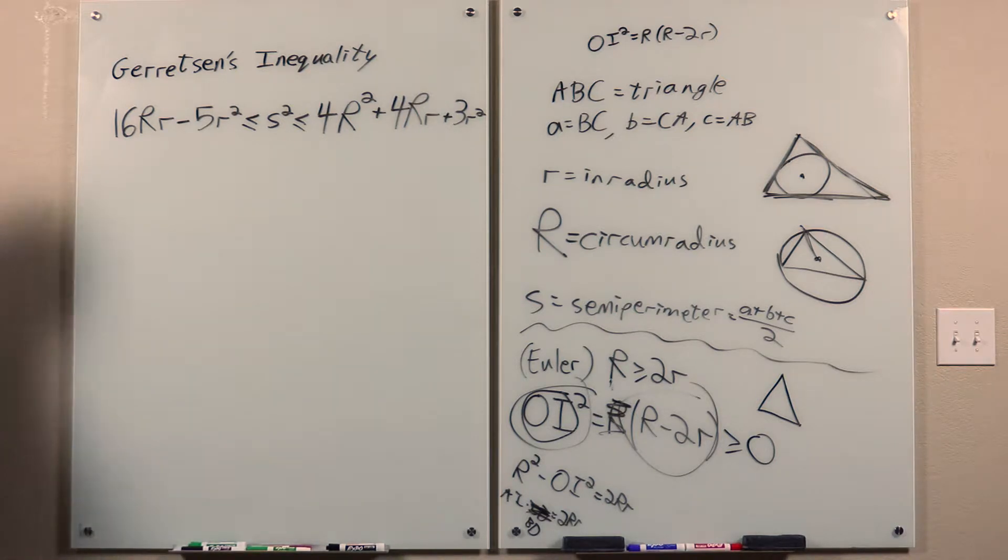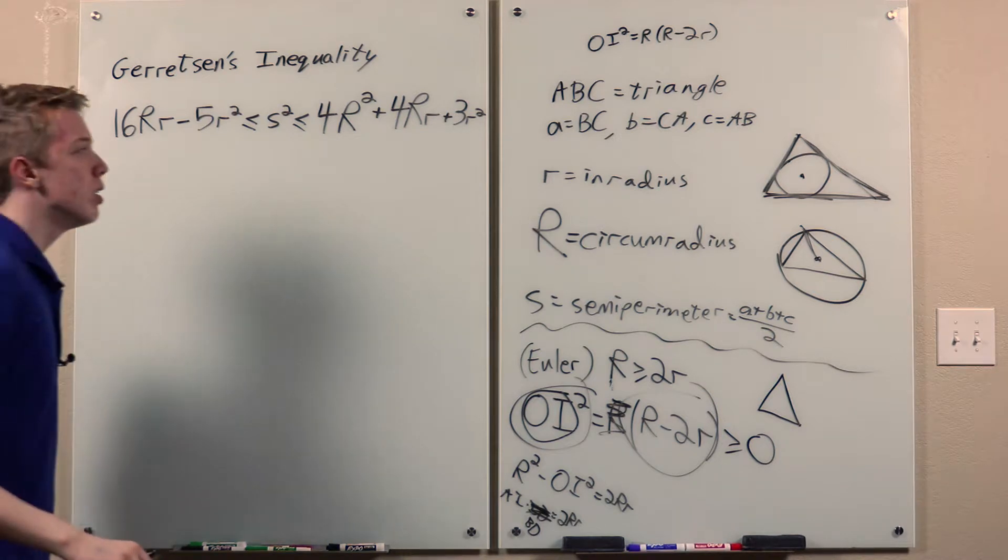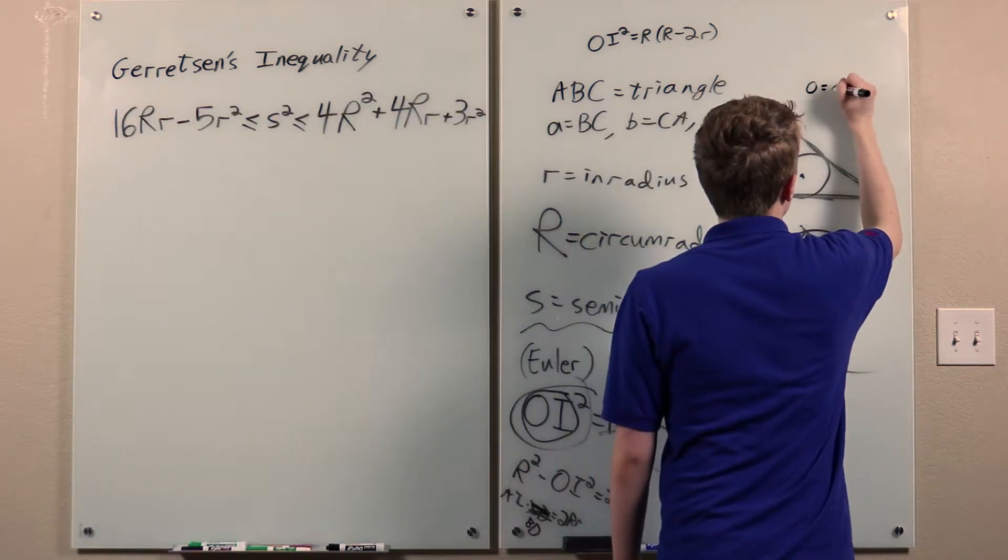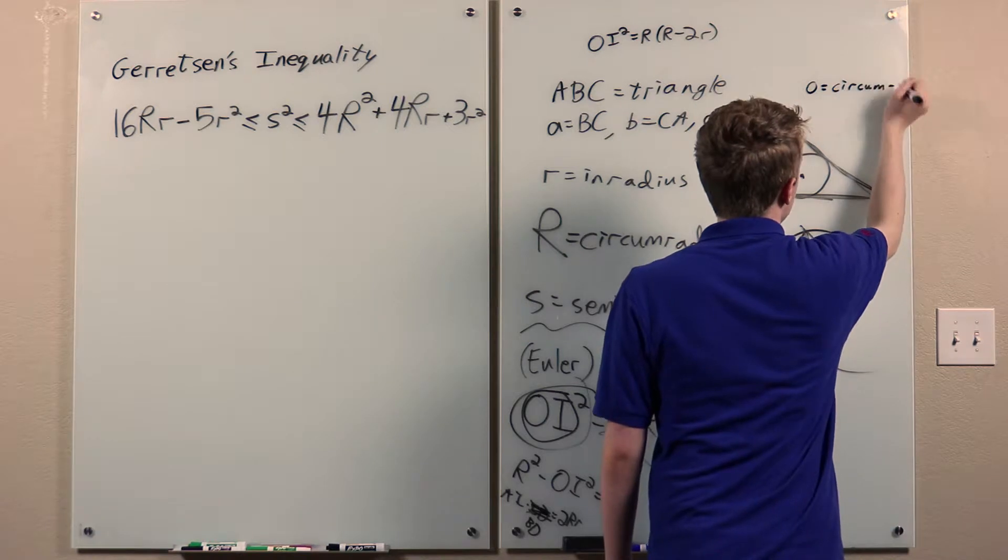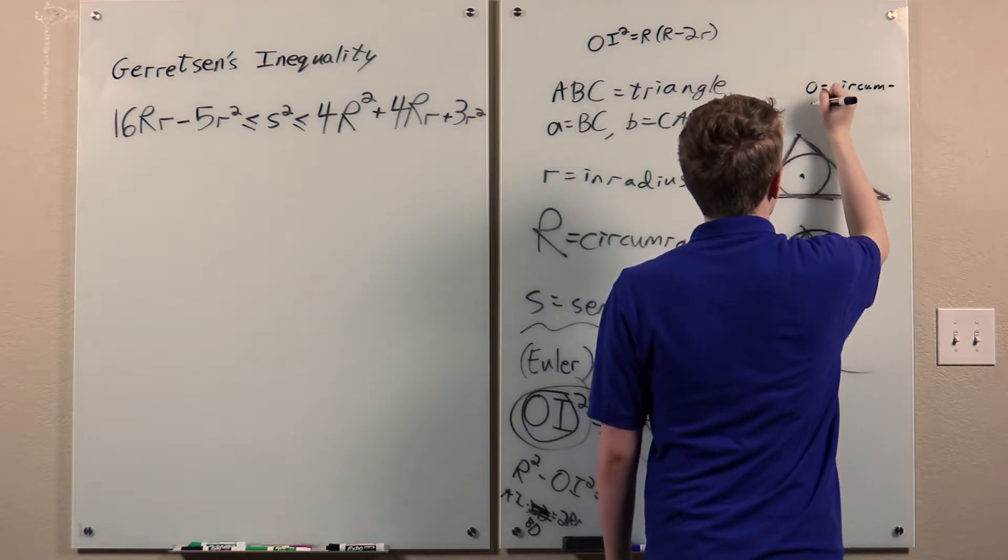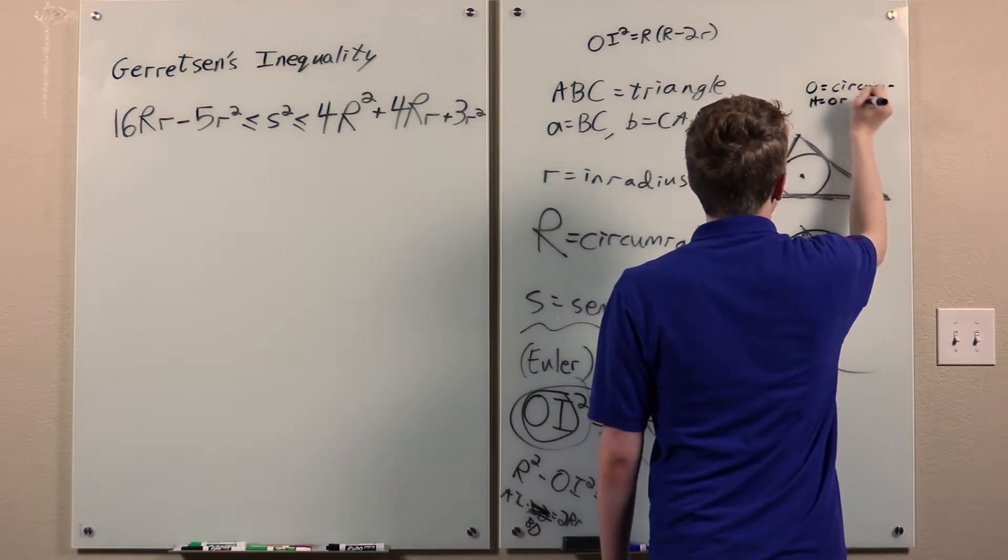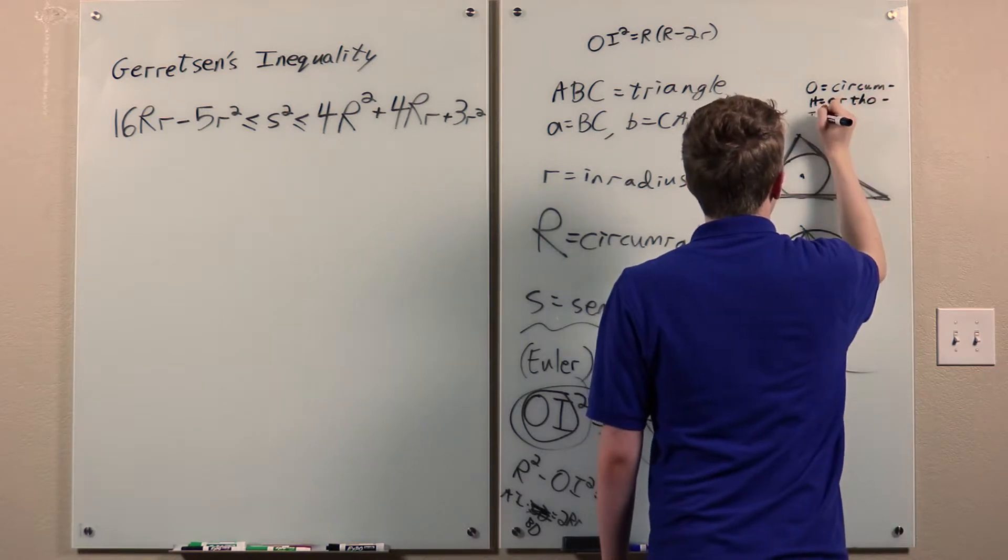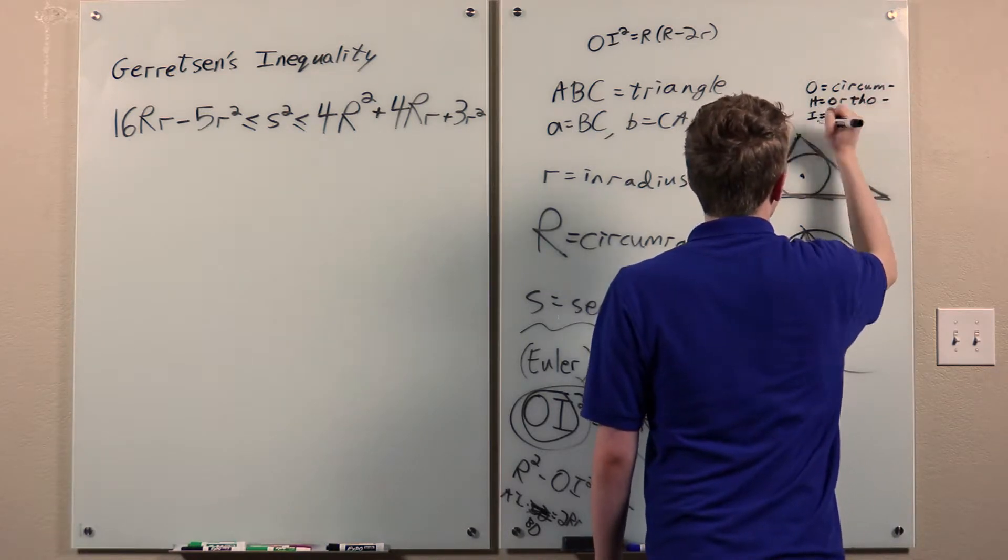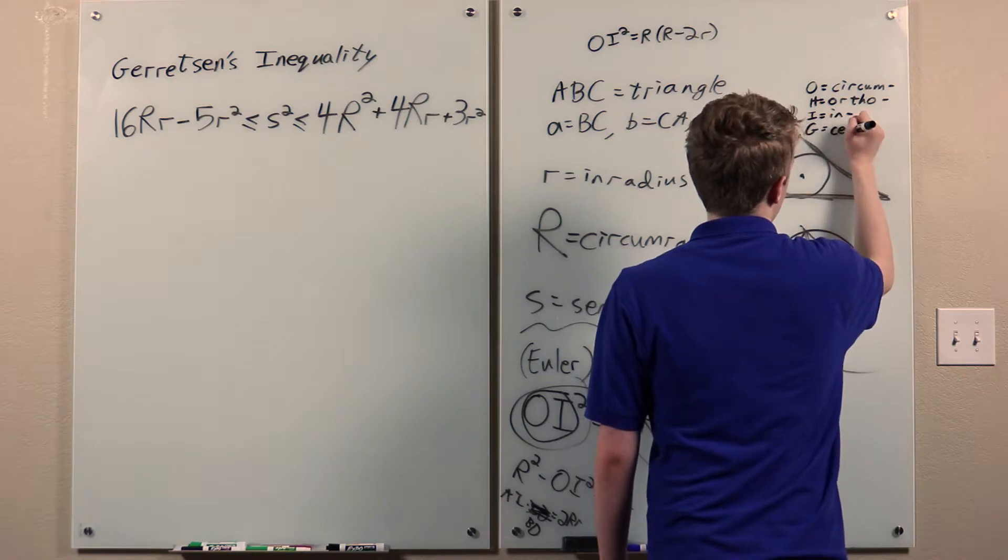Now, I claim that this follows. Let's let O be the circumcenter of ABC, H be the orthocenter, I be the in-center, and G be the centroid of ABC.